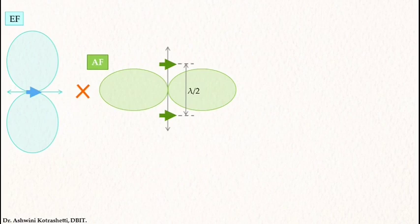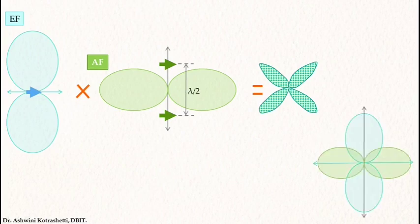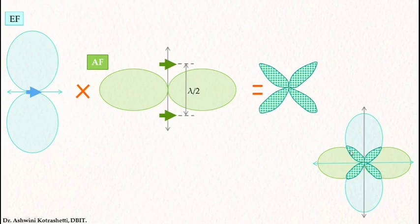I have the element factor and need to multiply it with the array factor. How do I find the product? It's very simple — just take the superimposition of both and you will arrive at the result. Superimposition means I am looking for the common area. The element factor multiplied with the array factor results in the pattern you see with four lobes in the resultant pattern. This is the common area between the element factor and the array factor, and that's the result of this pattern multiplication.